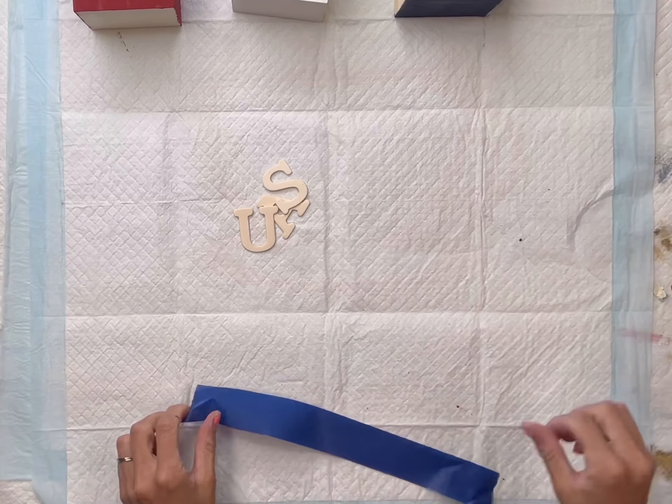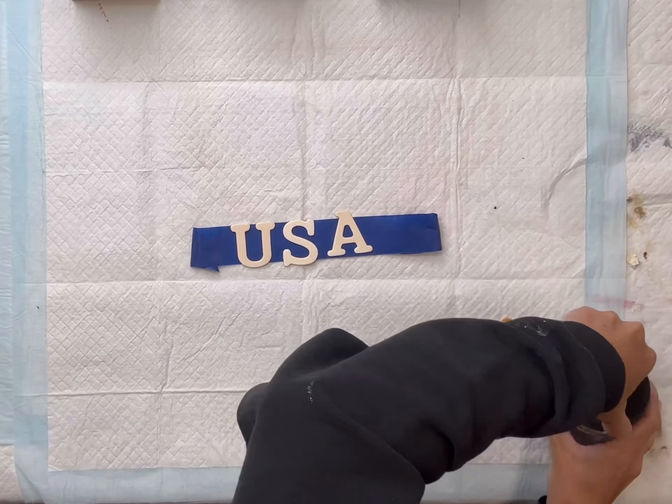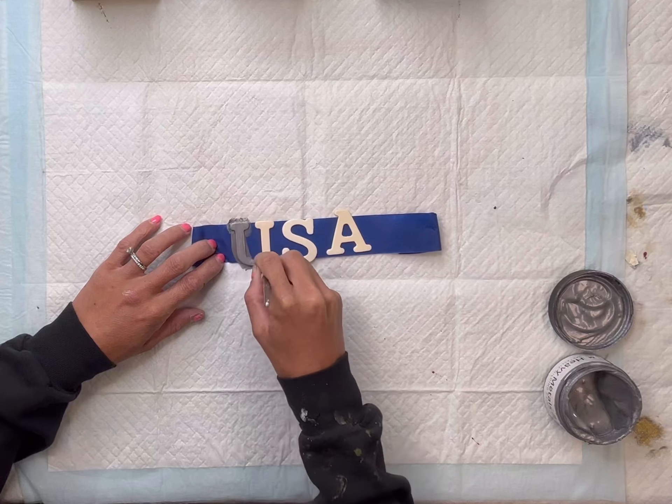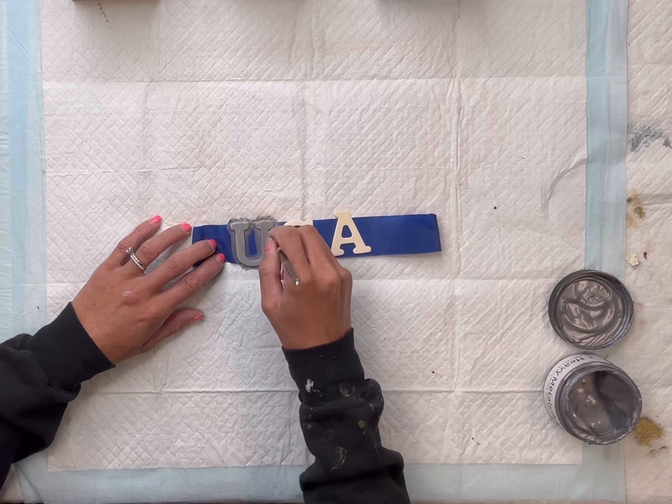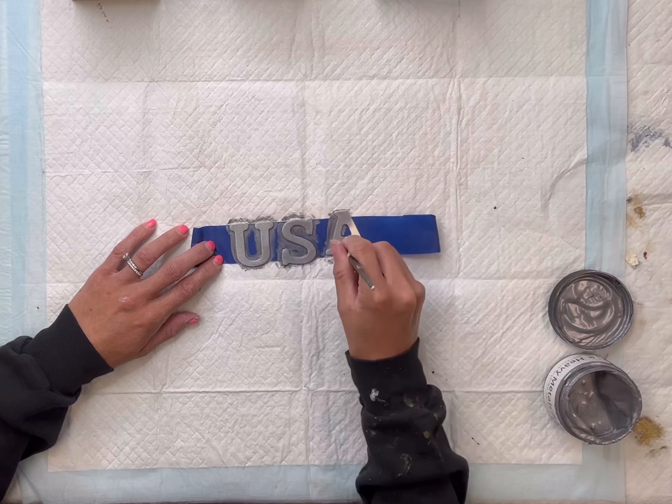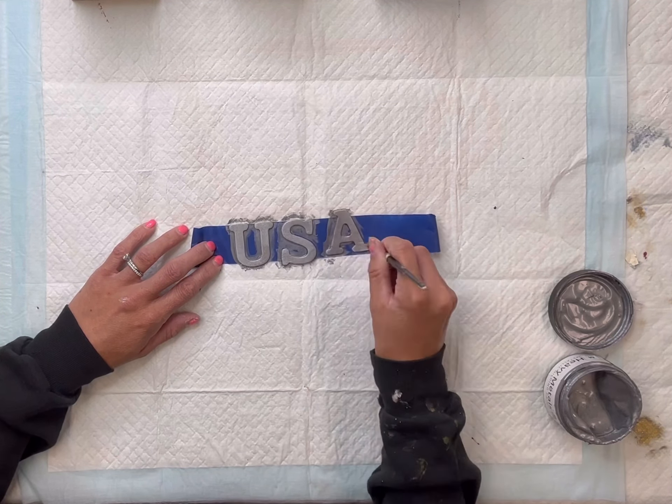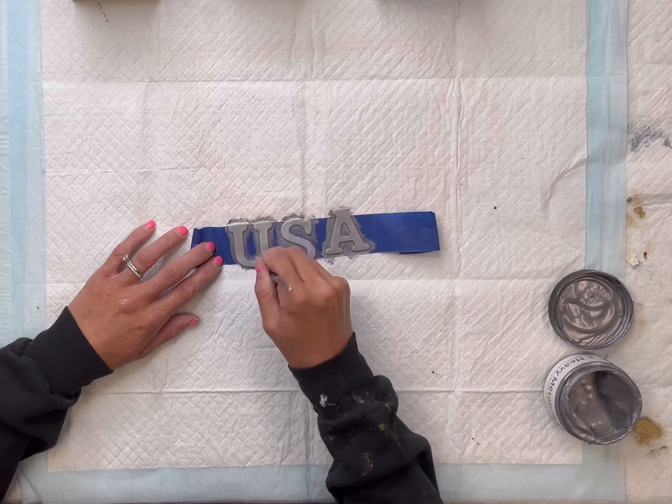I have some wood letters spelling USA. And I'm going to be using my silver gilding metallic paint from Wise Owl as well. They also have a gold. This is a really nice coverage. And all paint products can be found on our webpage at chocolatefancy.com.